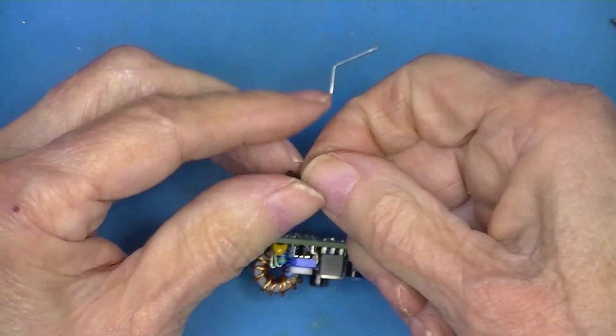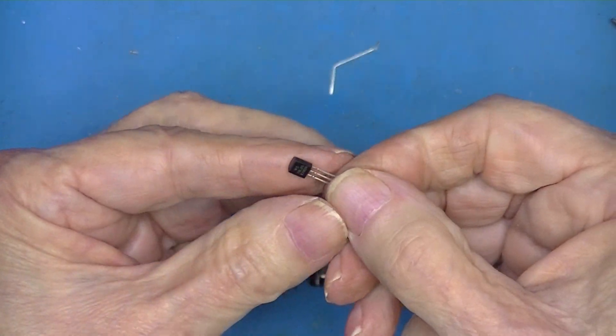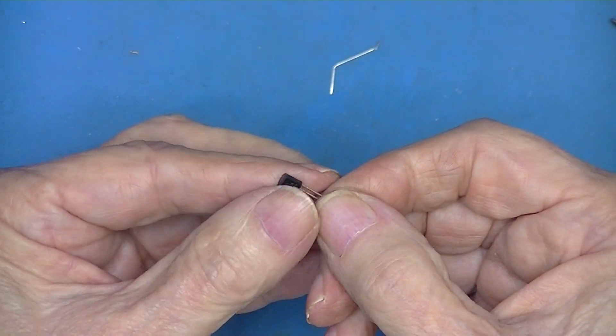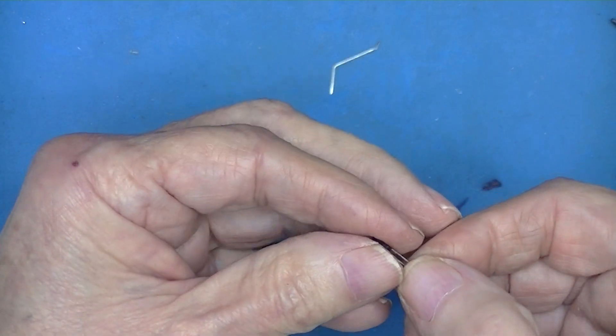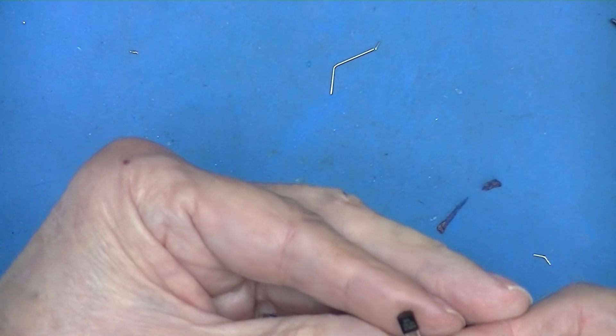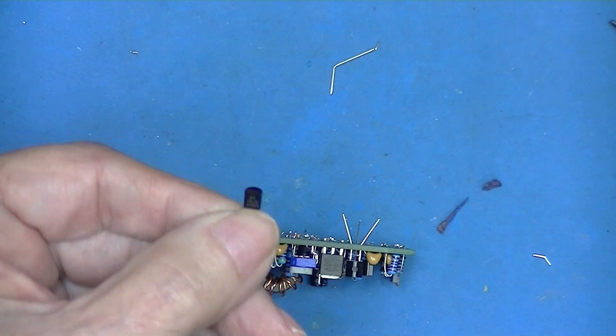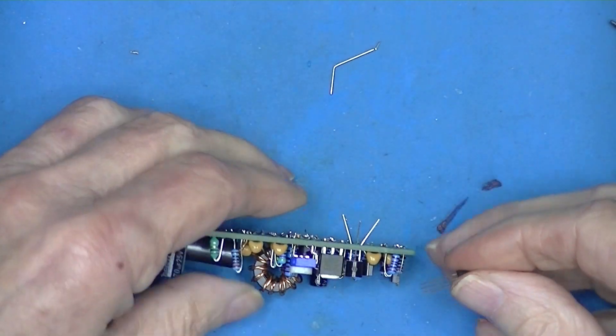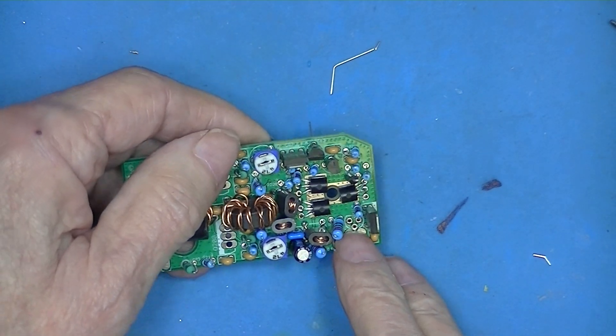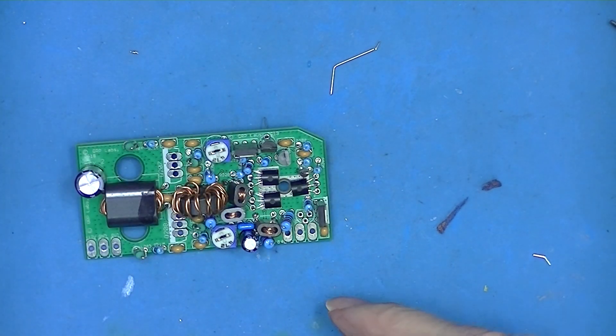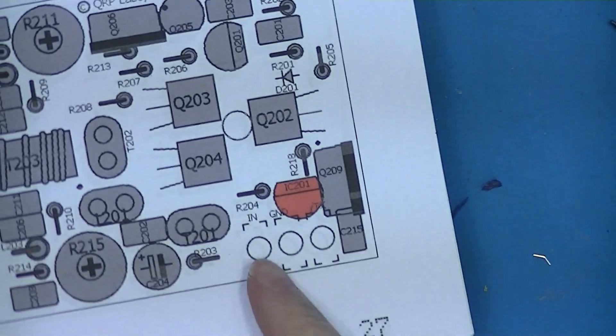We have one of these left. It had better be a 78L05. If not, somewhere along the line we've installed the wrong component. And it is a 78L05. It will install here. Another triangular hole pad. And the flat will face inward.